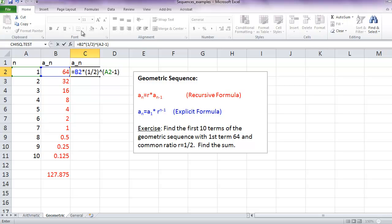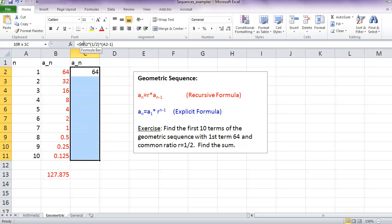Also, notice that this B2 cell, we don't want that to change as we go down the different rows of our Excel spreadsheet. So I'm going to put dollar signs around that. Let's fill down, and we get exactly the same terms.